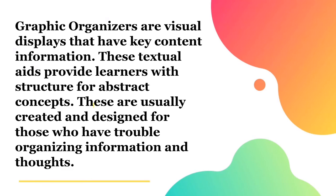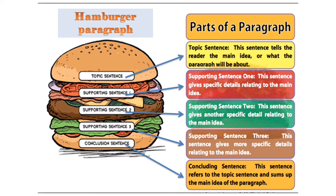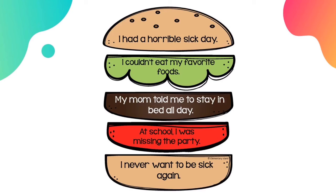Graphic organizers are visual displays that have key content information. These textual aids provide learners with structure for abstract concepts and are usually created for those who have trouble organizing information and thoughts. This hamburger paragraph is an example of a graphic organizer. This paragraph has different parts: the topic sentence, the supporting sentence, and the concluding sentence. For example, 'I had a horrible sick day' is the topic sentence. 'I couldn't eat my favorite food,' 'my mom told me to stay in bed all day,' and 'at school I was missing the party' are supporting sentences. And 'I never want to be sick again' is the concluding sentence.